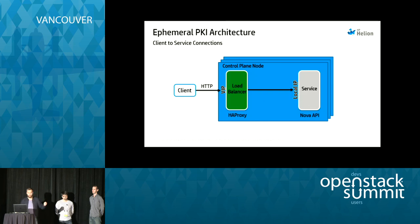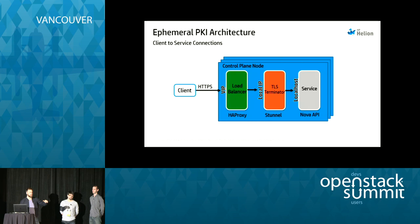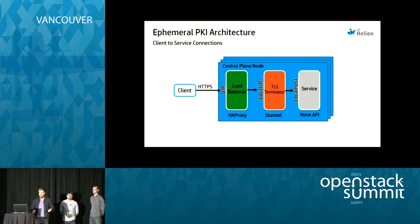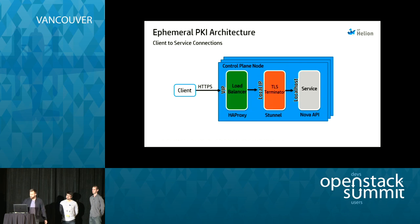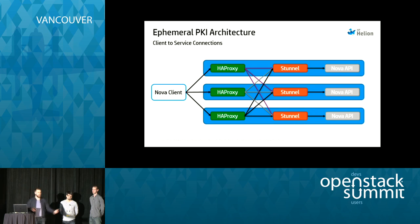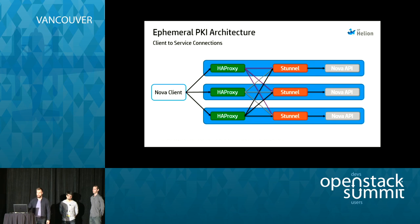The existing architecture has client connections coming into the control plane — a management node running all the API servers. The connection goes to the virtual IP (VIP) assigned to one of the nodes in the cluster, then to the load balancer and the local service. We added TLS into that gap: the client now uses native HTTPS into the load balancer, which hands off to a TLS terminator — in our case S-Tunnel. Services aren't designed for reloading certs every 12 hours, so we used this blanket approach.